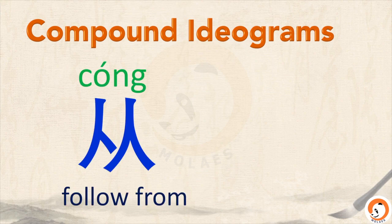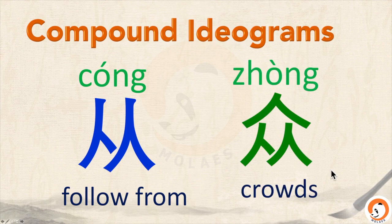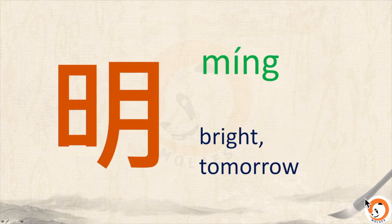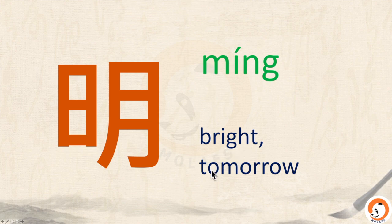But most ideograms are compound characters — they have two or more components in one character. As we have learned: 从 has two parts, 重 has three radicals. Another example is 明: 明 has two radicals. The left one is the sun, 日, and the right side is the moon, 月. And it means bright, and also tomorrow. 明.